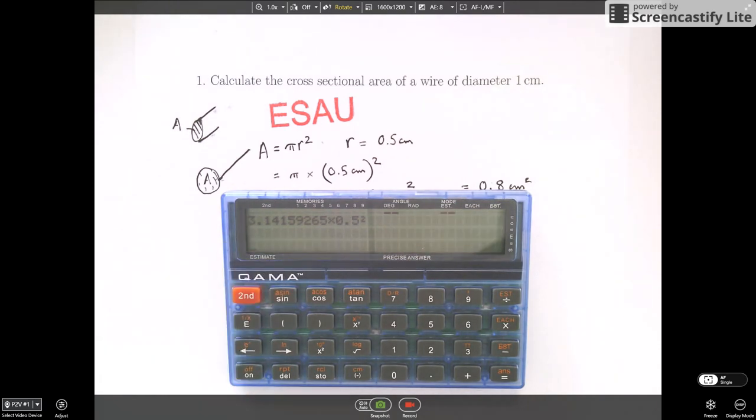So pi is almost three. 0.5 squared is about a quarter. So three quarters is about 0.75. So let's guess that. And then and only then will it give us the precise answer. So it makes us think a little bit about using our calculators.